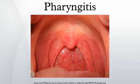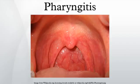Pharyngitis is a type of inflammation most commonly caused by an upper respiratory tract infection. It may be classified as acute or chronic. An acute pharyngitis may be catarrhal, purulent, or ulcerative, depending on the virulence of the causative agent and the immune capacity of the affected individual. Chronic pharyngitis is the most common otolaryngologic disease and may be catarrhal, hypertrophic, or atrophic.